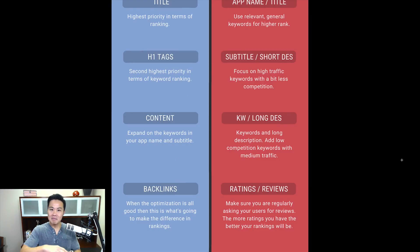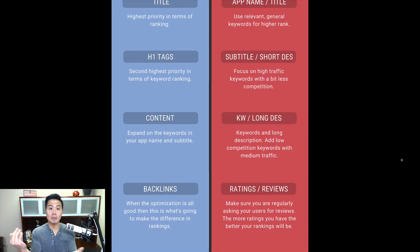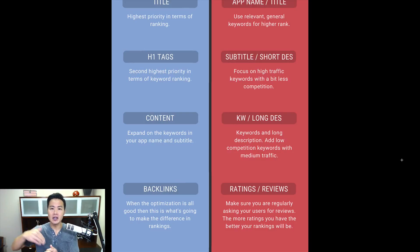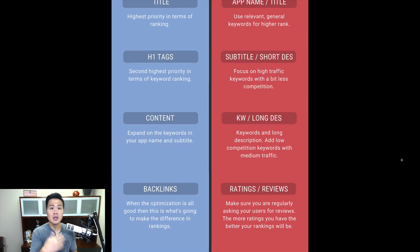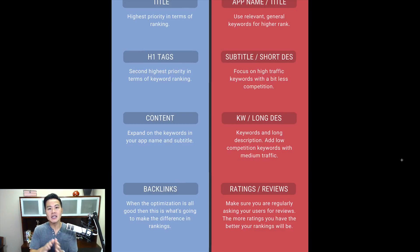Next are backlinks. On the web, when on-page optimization is equal between two sites, Google looks at backlinks to decide which ranks higher — more backlinks signals good content. In ASO, the equivalent is ratings and reviews. Google Play does say they're starting to incorporate backlinks to your Play listing, but if you focus on ratings and reviews, you'll probably rank better than focusing solely on getting backlinks — and it's a lot less work.